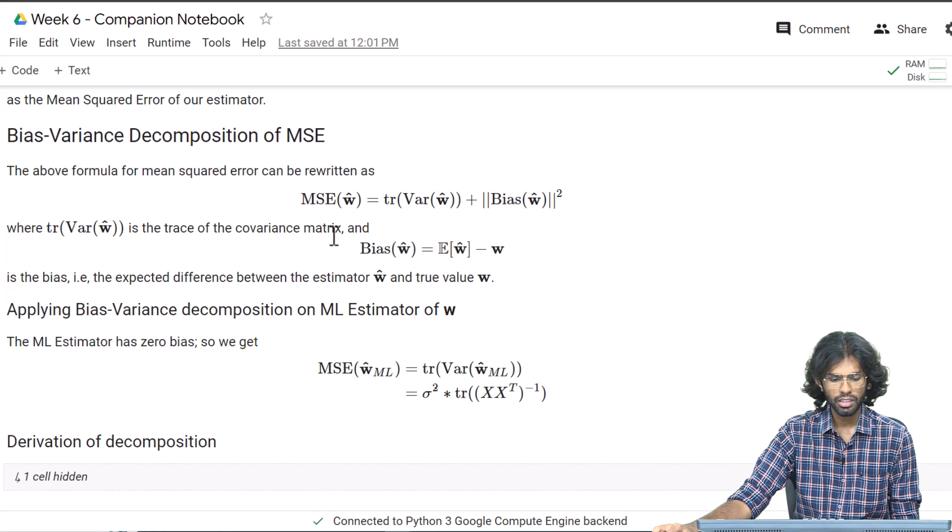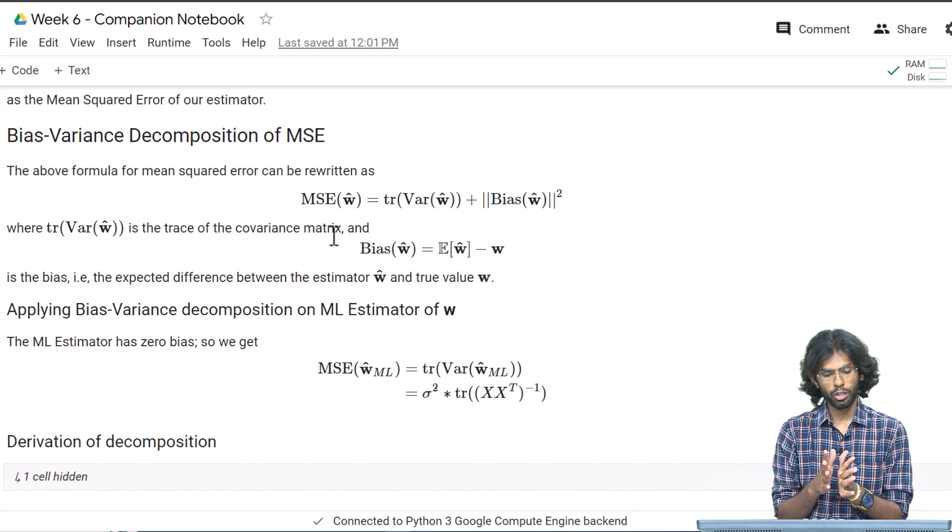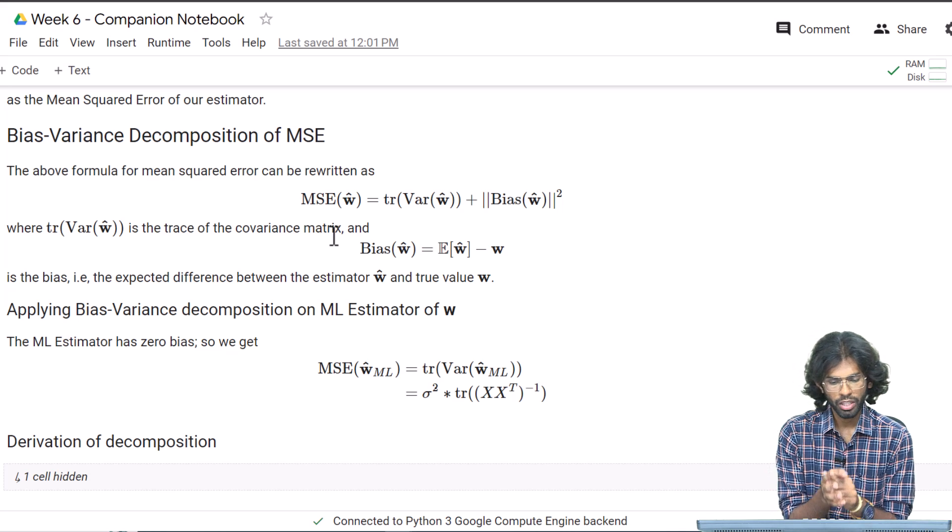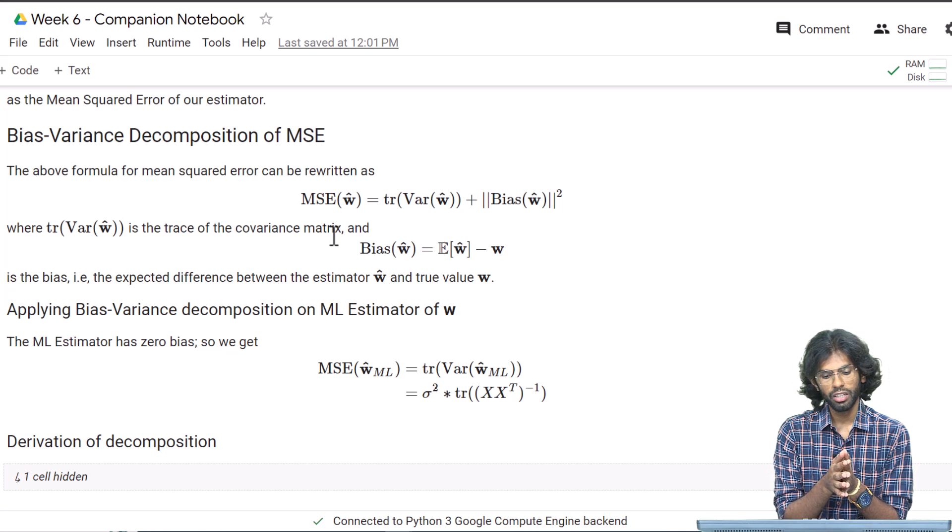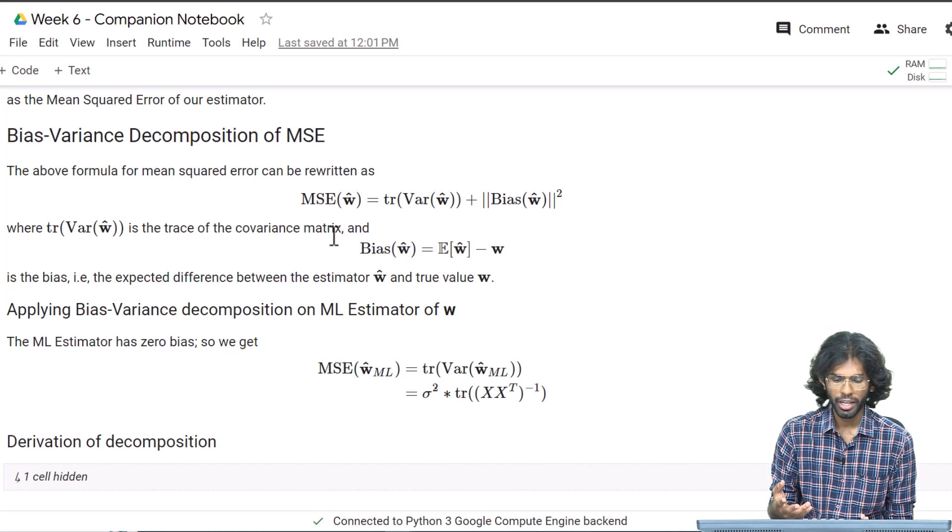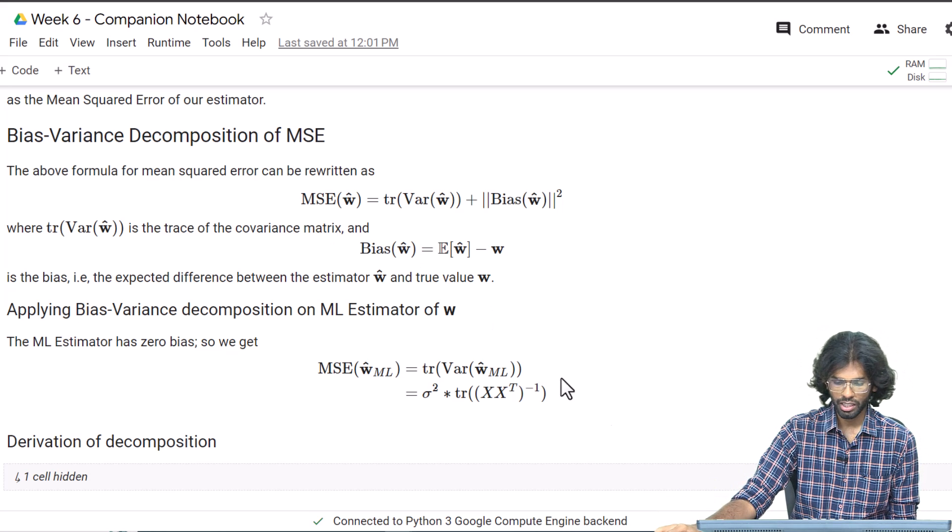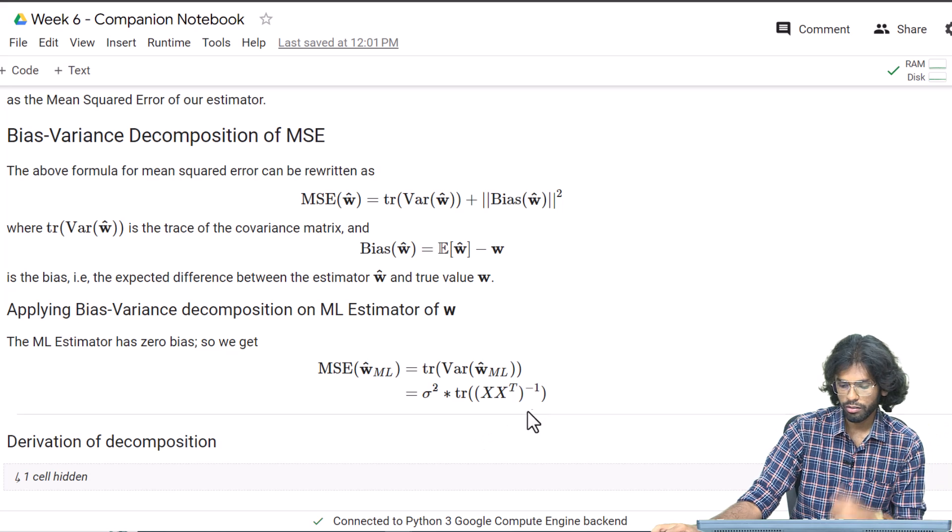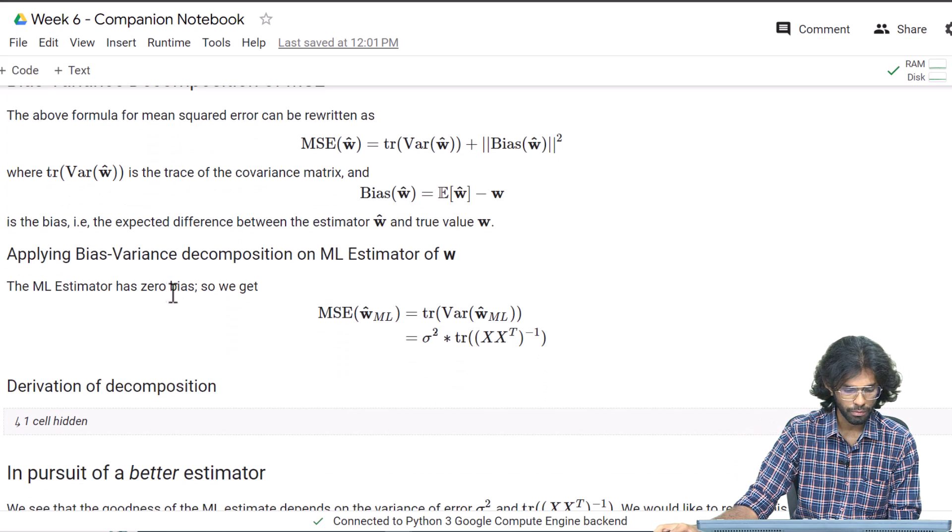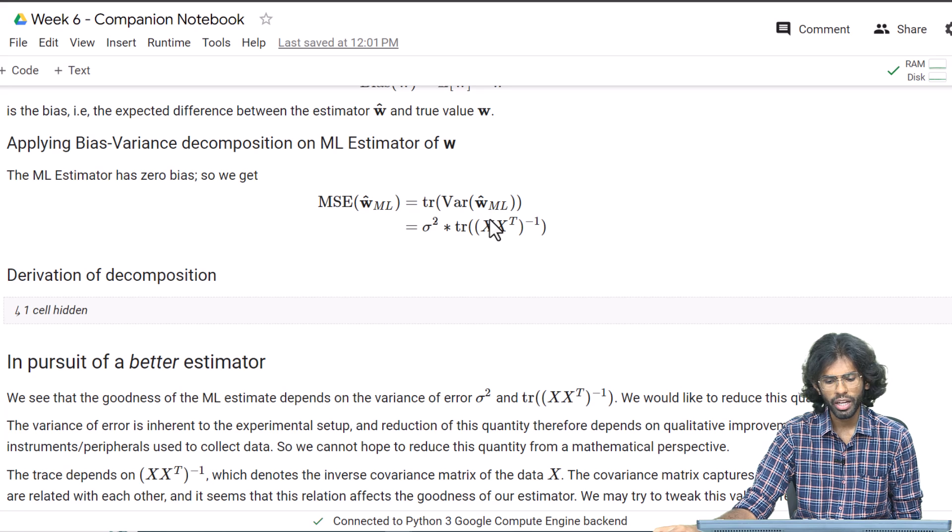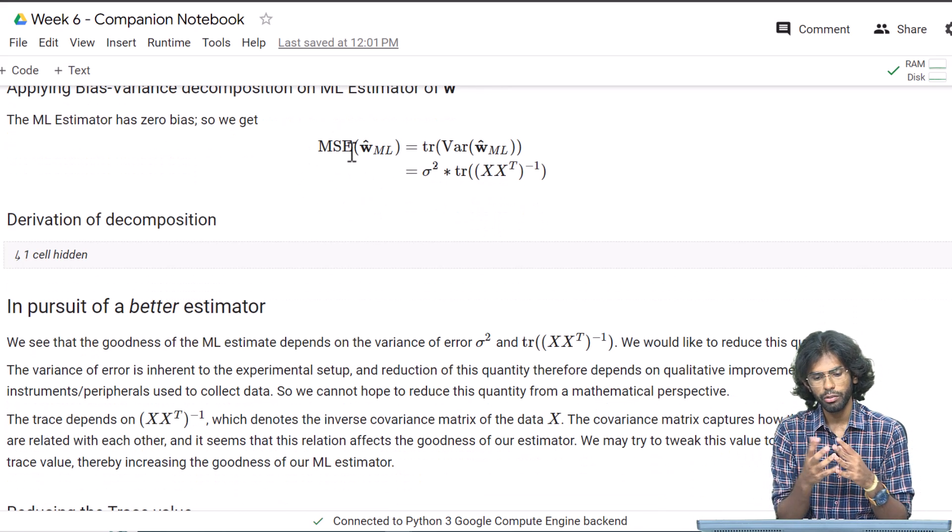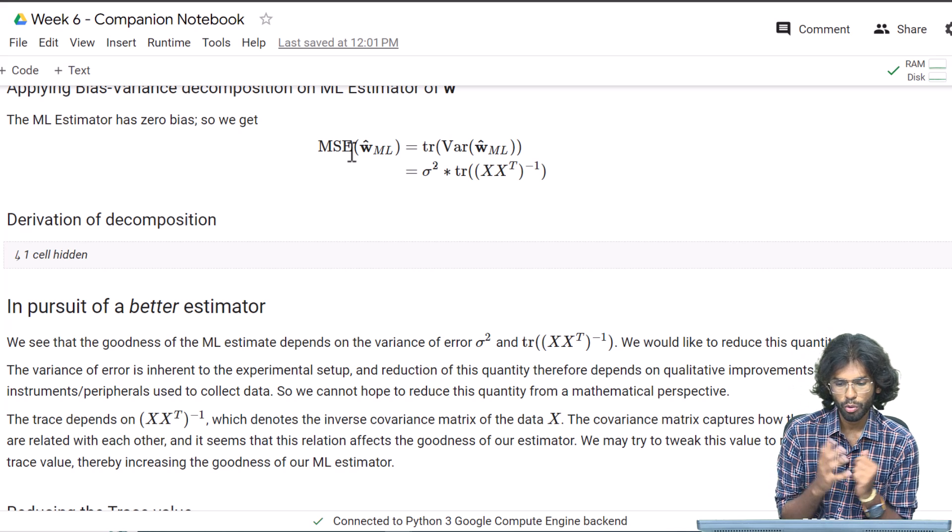The derivation for this formula is in this cell. We can apply this bias-variance decomposition on our ordinary least squares estimator. For the OLS estimator, the bias is zero—it is an unbiased estimator. Hence, only the trace is considered, and the trace of the covariance matrix of w-hat ML equals σ² times the trace of (XX^T)^-1. We want to make our estimator better. What can we do?